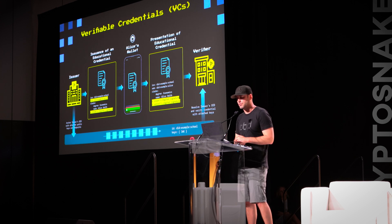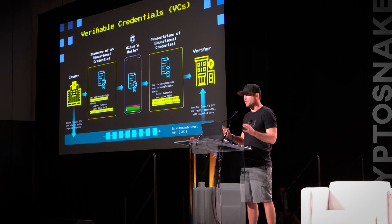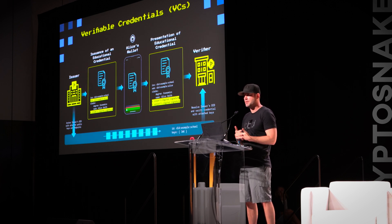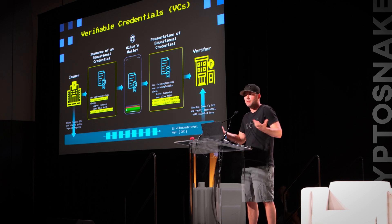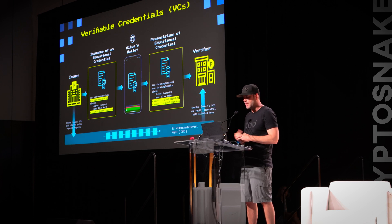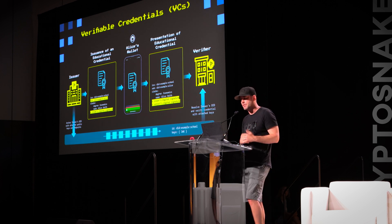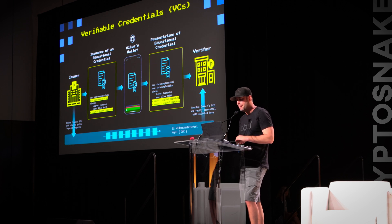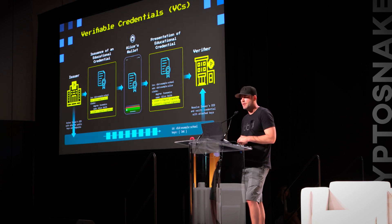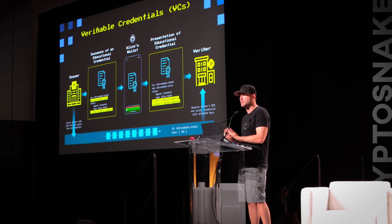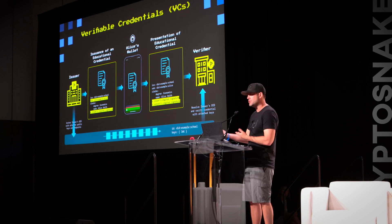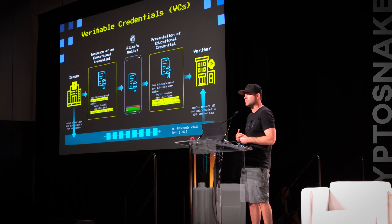The second piece is verifiable credentials. It might sound a little formal or governmenty, but all verifiable credentials are is a data model standardized by the same body that standardizes other web technologies, for cryptographically signing just about any statement between one or multiple parties. In this example, we have an issuer — an educational institution with its own DID — issuing an attainment credential to Alice. She receives it in her wallet, issued against her DID, and she can then present it to a verifying institution that asks whether she actually has that qualification.